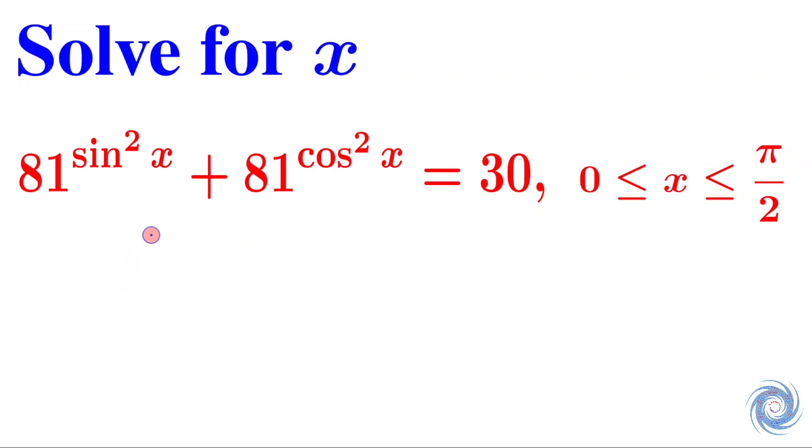Here the question is solve for x: 81^(sin²x) + 81^(cos²x) = 30, where x lies in the closed interval 0 to π/2.